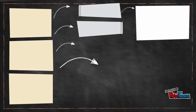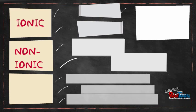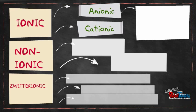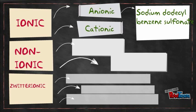Detergent can be classified into ionic, non-ionic, and zwitterionic detergents. Ionic detergent consists of anionic and cationic detergent. An example of anionic detergent is sodium dodecyl benzene sulfate, which is commonly found in laundry detergents.